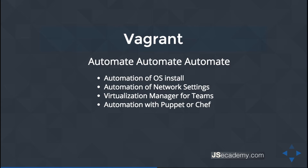Vagrant can automate even more with Puppet or Chef, or you can even create a bash script that will automatically install software for you. Again, Vagrant doesn't do the virtualization itself — Vagrant sits on top of a virtualization software in order to be able to virtualize machines.